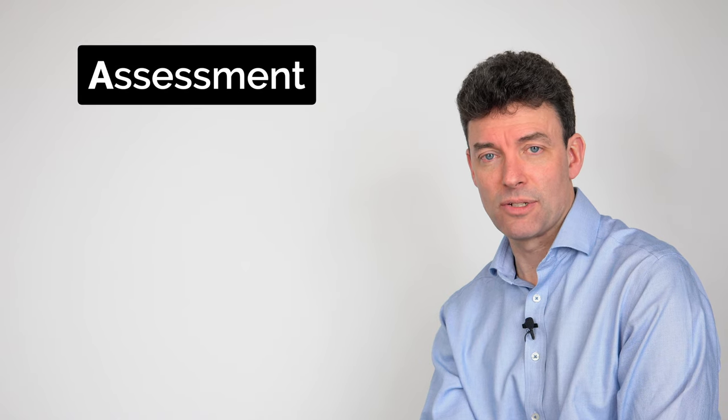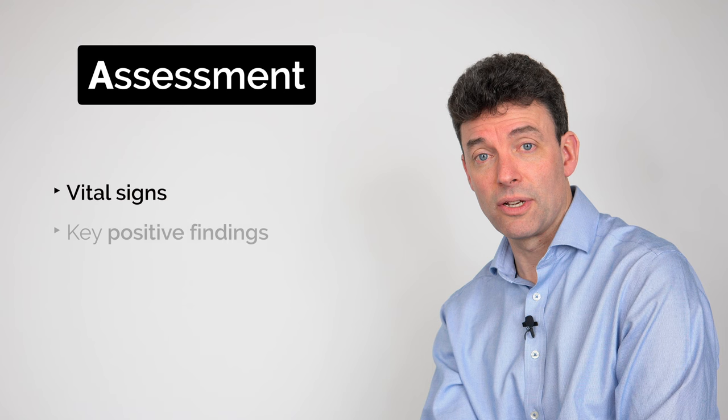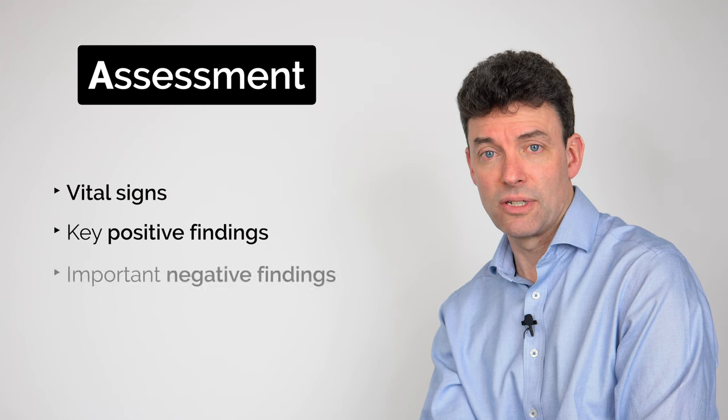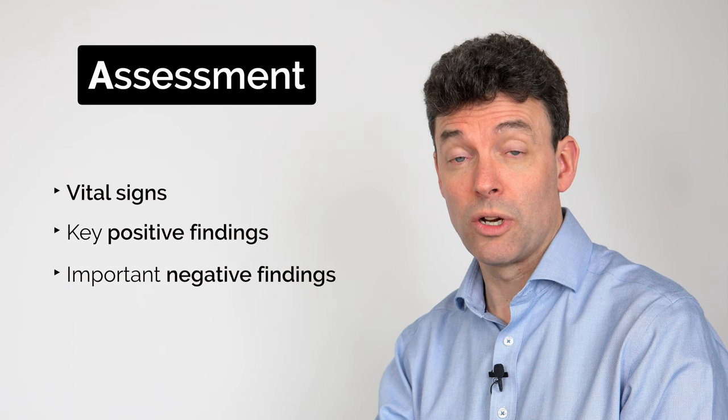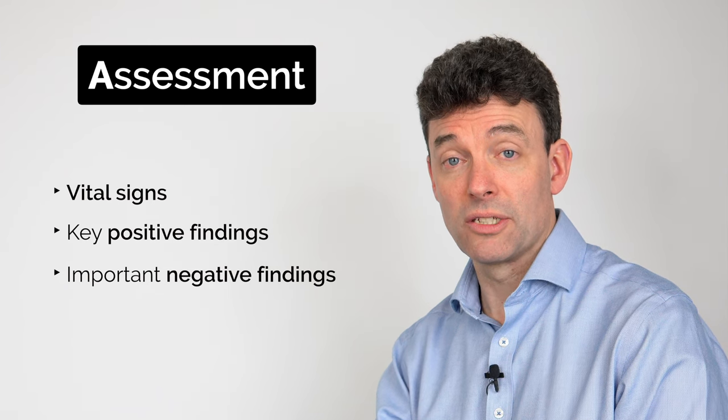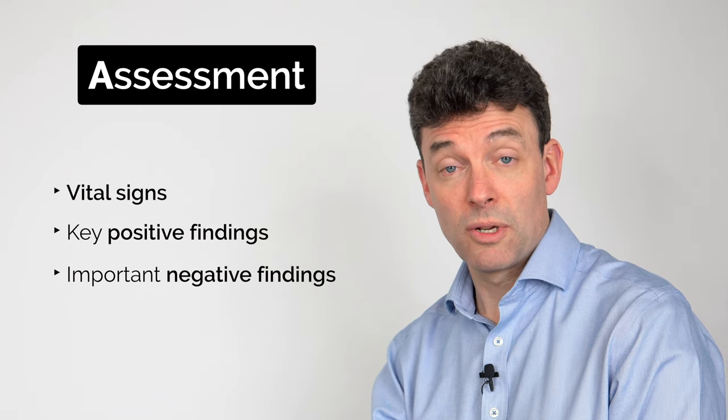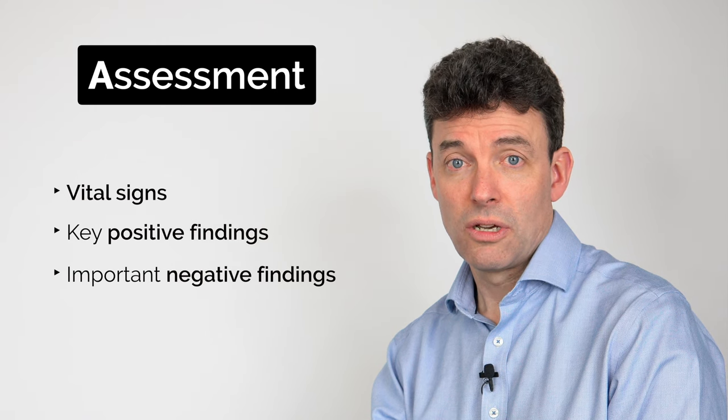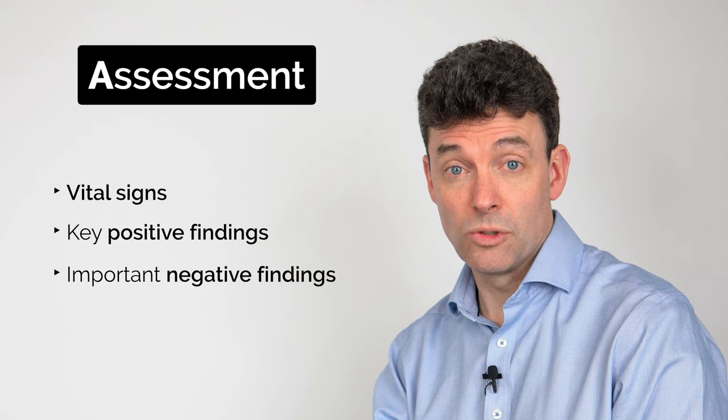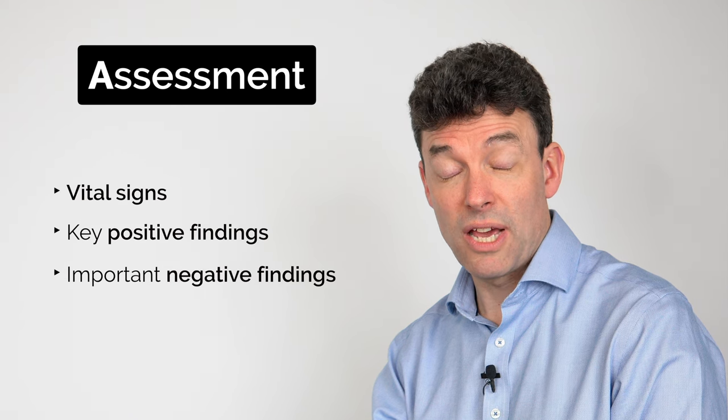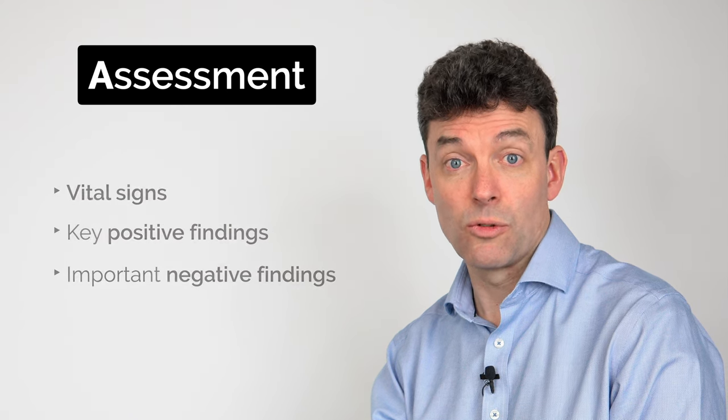Let's move on to A for assessment. This typically includes vital signs, key positive findings and important negative findings in your clinical examination. As an example, if I had a patient who I thought had appendicitis, I might say they have a raised pulse at 120, a pyrexia at 38.2. The rest of their vital signs are normal. On examination of their abdomen, they have rebound tenderness in the right iliac fossa.